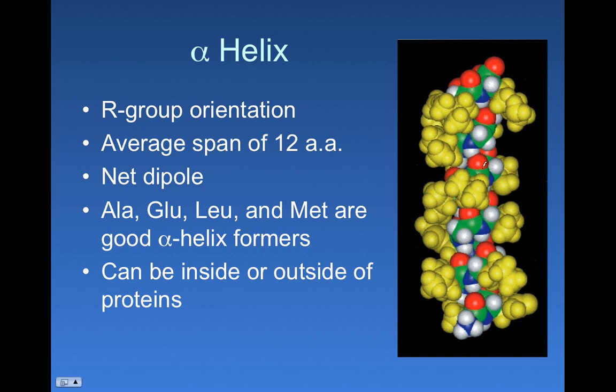And a protein function is really dependent on the individual chemistries that are provided by the amino acids. Now if those amino acids are present in the alpha helix secondary structure, then all those interesting R group chemistries are displayed on the outside of this structure. And they can interact with other chemistries to bind things, to catalyze reactions.